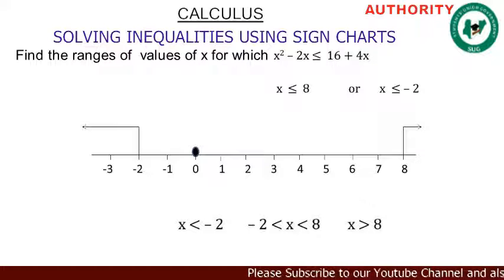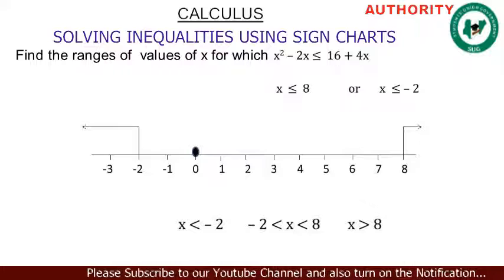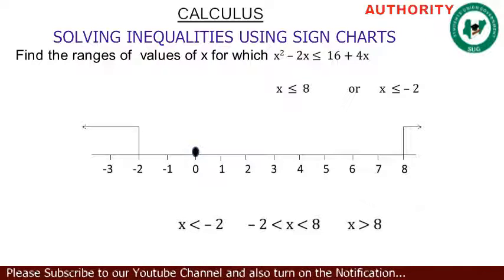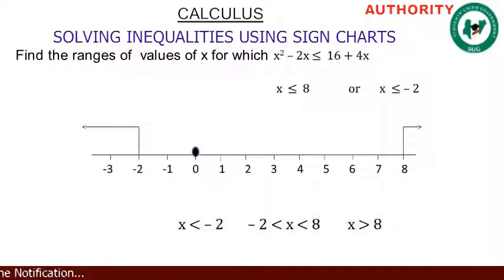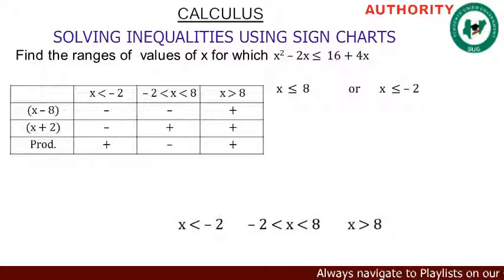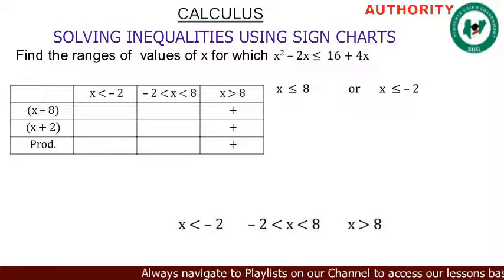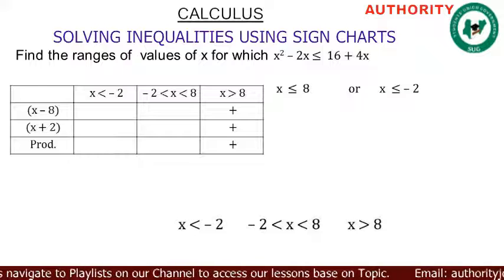From minus 2 downwards is x less than minus 2. Numbers from 8 upwards is x greater than 8. Now draw a four-by-four table. In the first row, replace it with the ranges of values: x less than minus 2, then minus 2 less than x less than 8, and then x greater than 8.